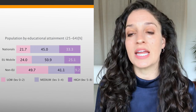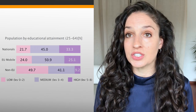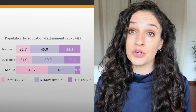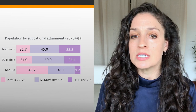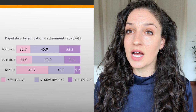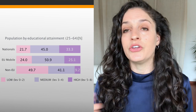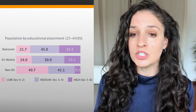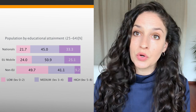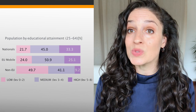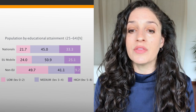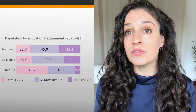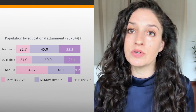Looking at education, the educational attainment of nationals and European immigrants looks very similar — nationals have slightly higher levels of high education and European immigrants slightly higher levels of mid-level education. The difference is more stark for migrants from outside the EU, who are more represented at low and medium levels of education.